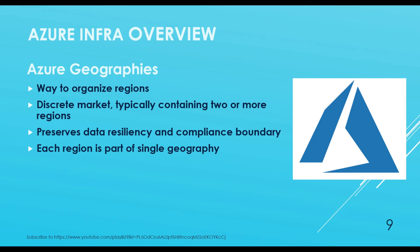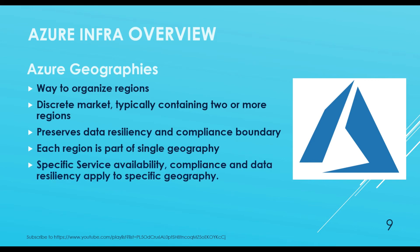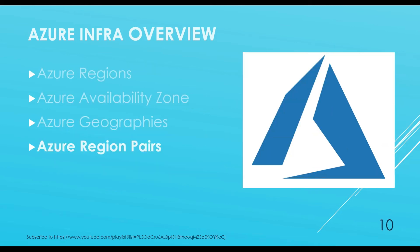Each region is part of a single geography — a region cannot be part of multiple geographies. For example, in India there are three regions: South India, Central India, and West India. Those three regions cannot be part of both Asia Pacific and Europe — they must belong to a single geography. Specific service availability, compliance, and data resiliency are applied to a specific geography.